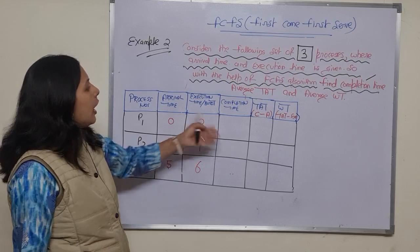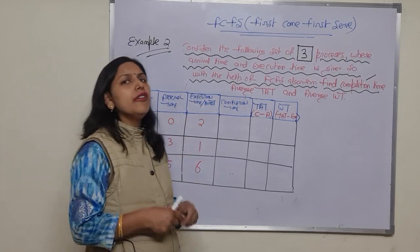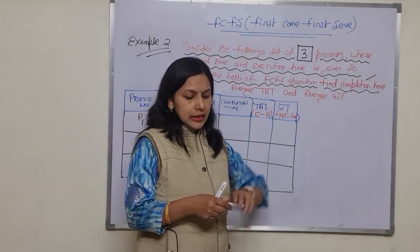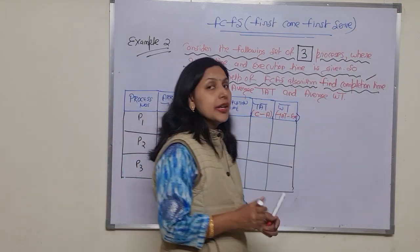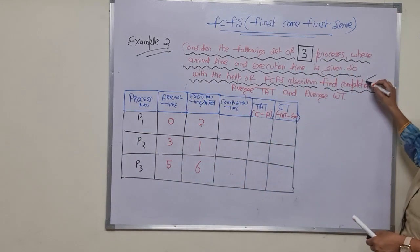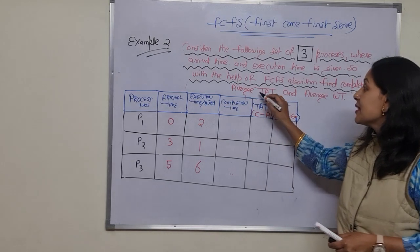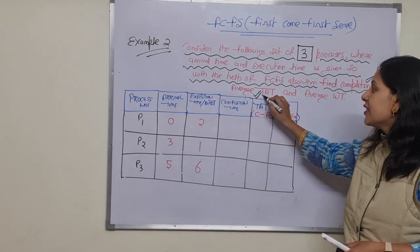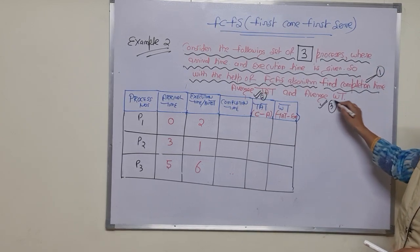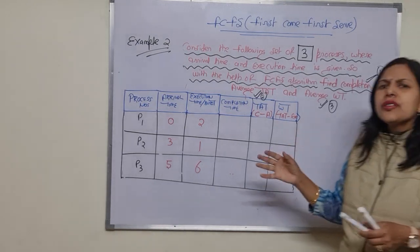Using the FCFS algorithm, we have to find the completion time, the average turnaround time, and the average waiting time.